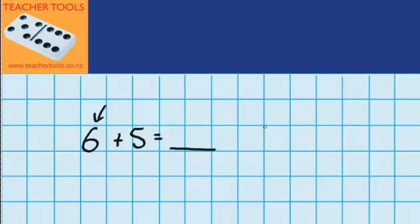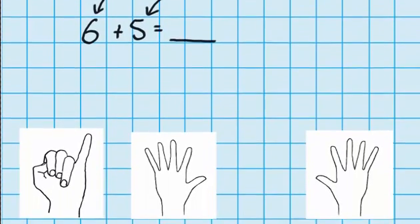Now let's imagine that you can also use a buddy's hand to help you answer this question. You're going to get your buddy to show 5 with his fingers. So you're showing 6 fingers and your buddy's showing 5 fingers.